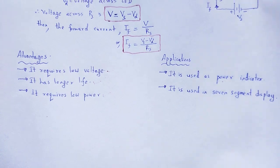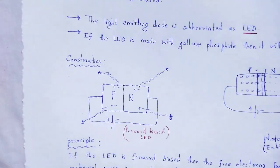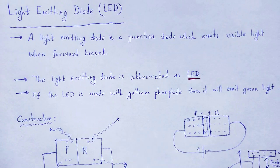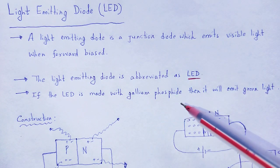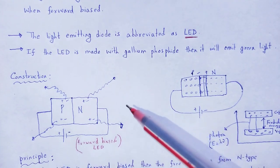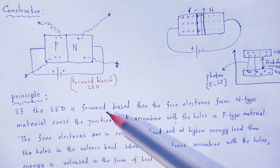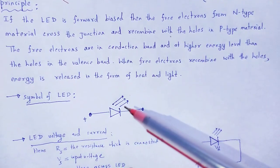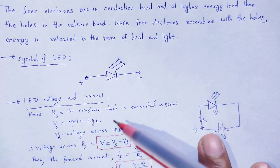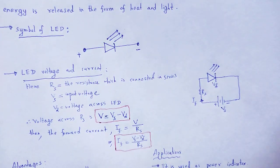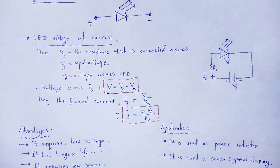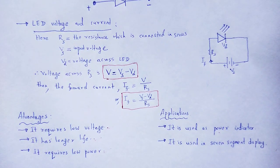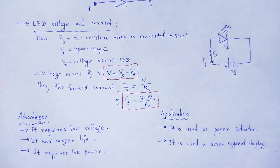With the help of this video lecture, we have understood the concept of light emitting diode: what is a light emitting diode, its abbreviated form LED, its construction, the principle on which it works, the symbol of LED, LED voltage and current, and the advantages as well as applications of LED. With these useful and informative notes, let me wind up this session. Thank you.